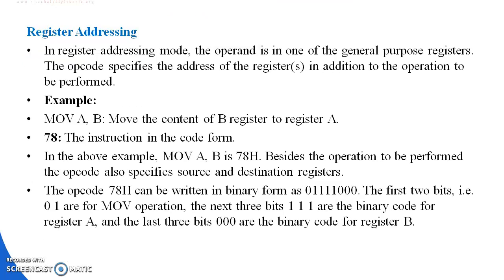Next is Register Addressing Mode. In Register Addressing Mode, the operand is one of the general-purpose registers. The opcode specifies the address of the register in addition to the operation to be performed. For example, MOV A, B — it means move the content of register B to register A. The opcode for MOV A, B is 78H.